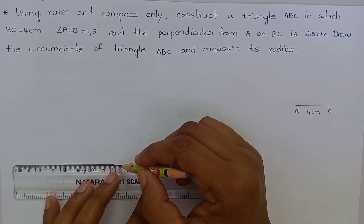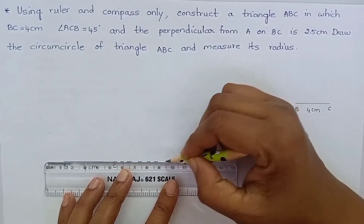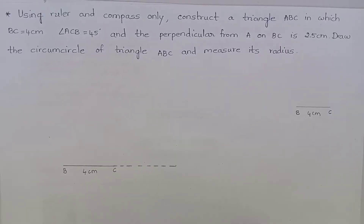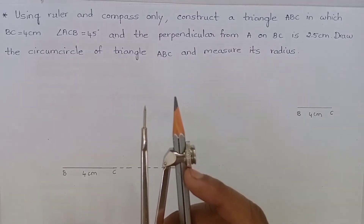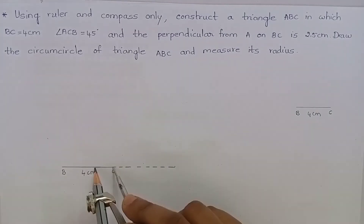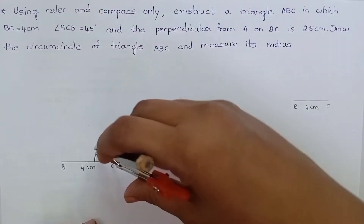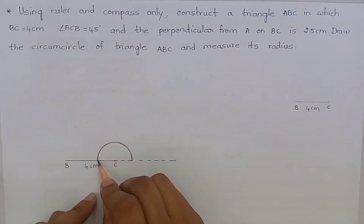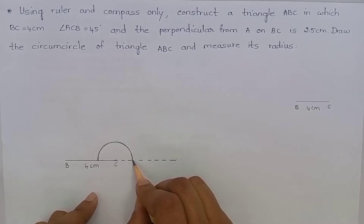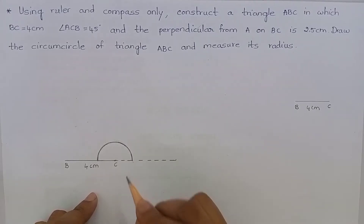Let me produce this line. We have produced a line at C. Take the compass of any measurement and keep the compass on the point C and draw an arc. You know that from here to here this angle measures 180 degrees. If we take the angle bisector of 180 degrees, it will become 90 degrees.